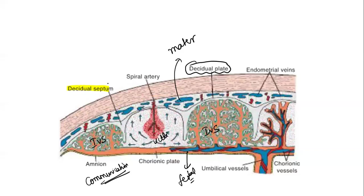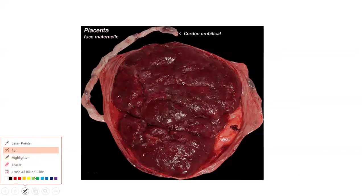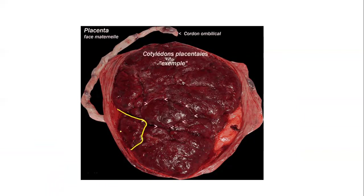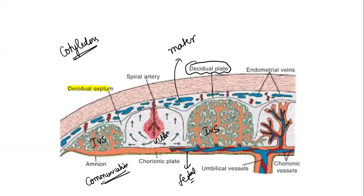The decidual septum also divides the placenta into many cotyledons, in addition to providing communication between the intervillous spaces. Looking at this picture, you can appreciate the septum dividing the placenta into distinct compartments — each is a cotyledon.